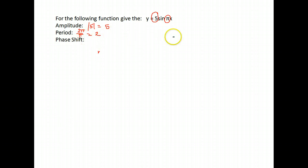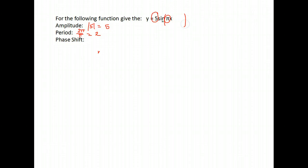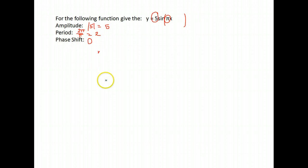Finally, for the phase shift — to have a phase shift, you have to have something added or subtracted from your x. And if there is nothing, then there is no phase shift. So on this one we have a phase shift of 0.